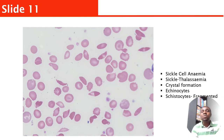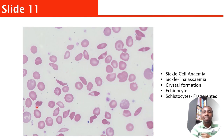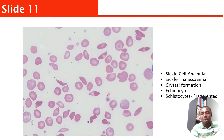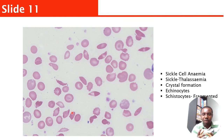This slide is obvious — you can see sickle cells. This is sickle cell anemia. There are also some crystal forms of red blood cells visible. Once you see this, mention that this is sickle cell anemia or sickle cell disease.